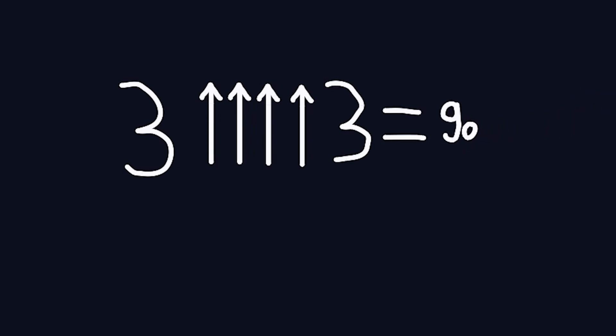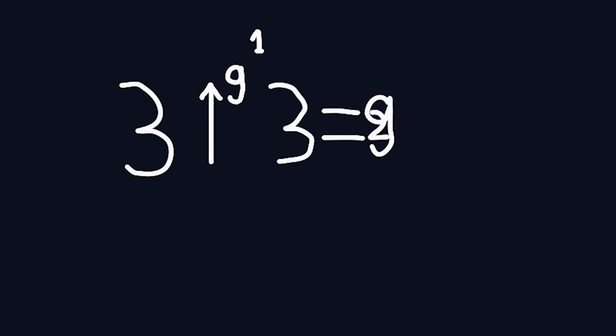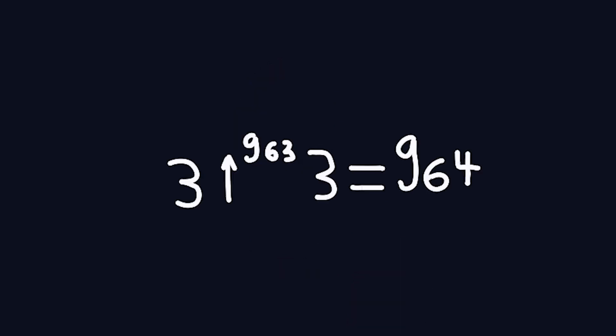Let's find a new giant. Start with three hexated to three. This number by itself is already far beyond human comprehension — so large that it would be nigh impossible to write with regular numbers or even powers. Call this number G0, and then raise three to the hyperoperation of G0, that is to say, put a three, then G0, then another three. Call the resultant number G1. Repeat this process with G1 to get G2. Three raised to the hyperoperation G2 yields G3. This number grows and grows. Repeat until you reach G63, then do it one more time. Three raised to the hyperoperation of G63 gives us G64 — Graham's number.